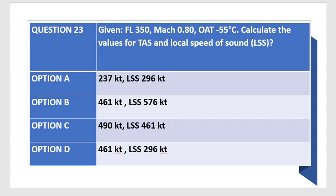Question states, given flight level 350, Mach number 0.80, OAT minus 55 degrees Celsius, calculate the values for TAS and local speed of sound and the options are as indicated below.